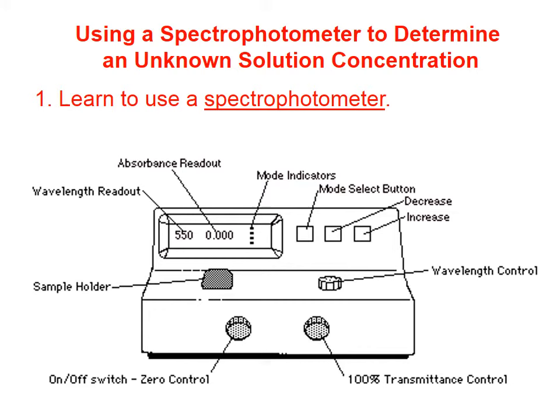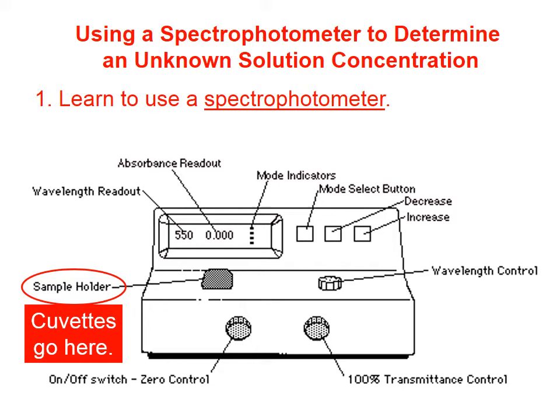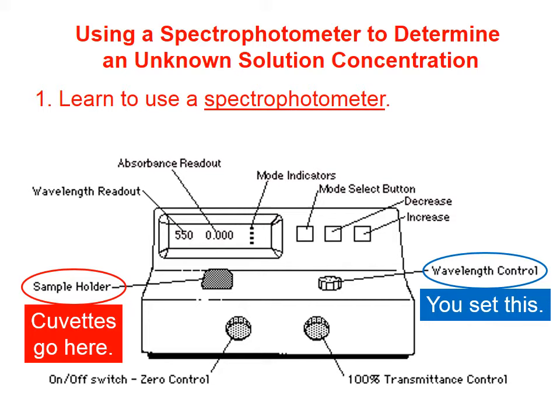Using a spectrophotometer to determine an unknown solution concentration — here are some steps for doing this. First, we need to learn how to use a spectrophotometer. Here's a diagram of the essential parts: we have a sample holder, which is where we put the cuvettes — with no finger smudges, incidentally. Over on the right, we note the wavelength control. We set this to specific wavelengths, and that wavelength will be read out on the screen. In this case, we have set this to a wavelength of 550 nanometers.